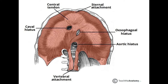Now moving to the central part — the central tendon. You can see on the diagram it's a lighter color in the center. The central tendon is formed by the muscle fibers of the diaphragm converging together into this tendon in the middle.